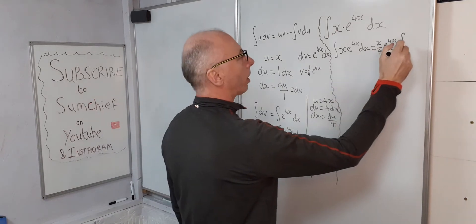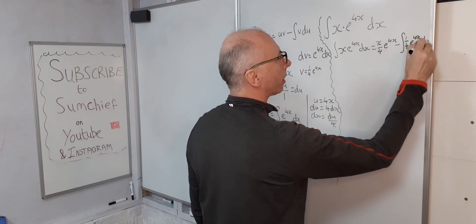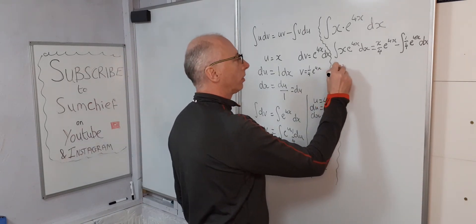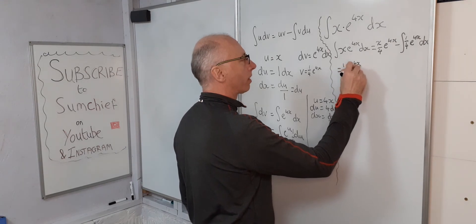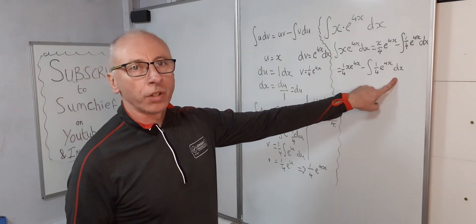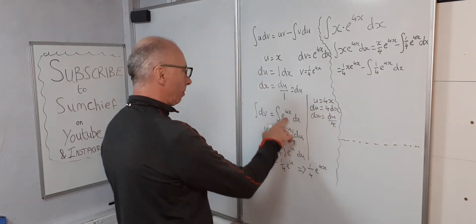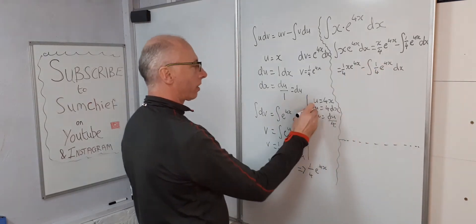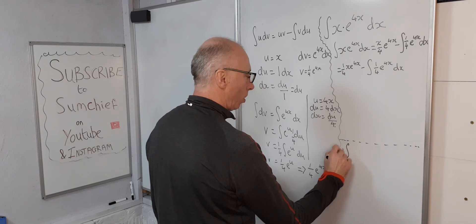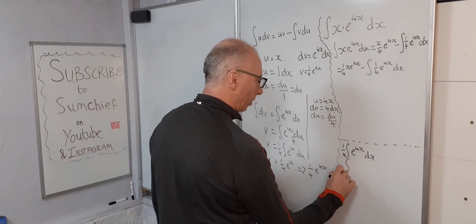So we write: x over 4 times e to the 4x minus the integral of one quarter e to the 4x dx. We've got another integral to work out. Using the same u-substitution approach: u equals 4x, du equals 4 dx, dx equals du over 4. So the integral of one quarter e to the 4x dx becomes one quarter times the integral of e to the u du over 4.